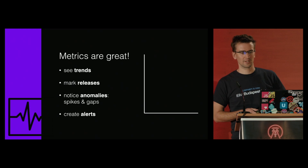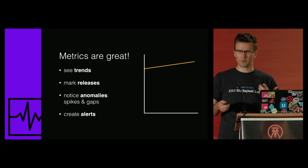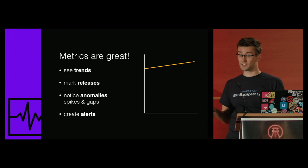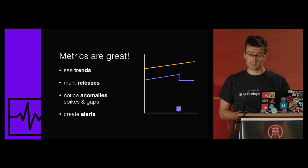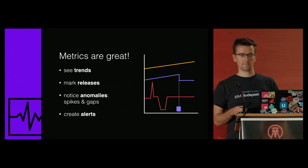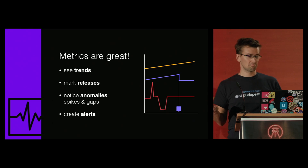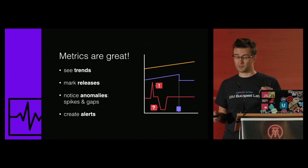Metrics are great. Because they are historical, you can reveal trends using metrics: slow memory leaks, user growth, storage size. You can mark feature releases, like new code getting into production, and see the results or consequences of it. You can find out about anomalies, like gaps or spikes — whether they are periodic, happening at the same time every day or just seem random. And you can set alerts and get notified if things get worse.